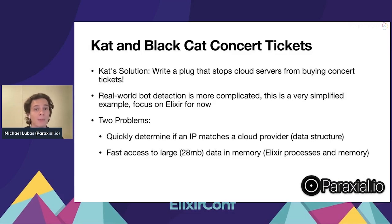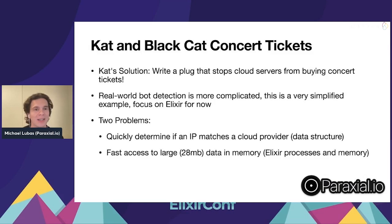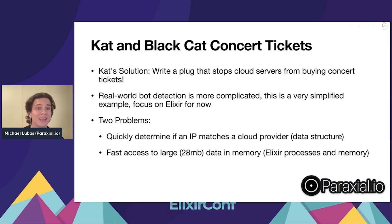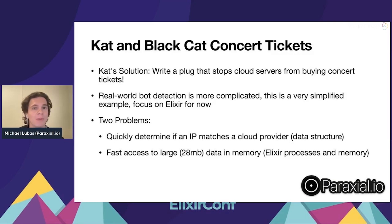The second problem, once that's solved, is that the data structure you come up with is going to be pretty big — about 28 megabytes. You need a way to access this from all your different processes because every incoming connection to your Phoenix application has to access it without blowing up your memory. So we'll compare ETS, gen server, and persistent term, and see which one Cat picked.